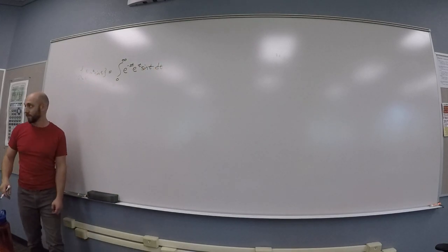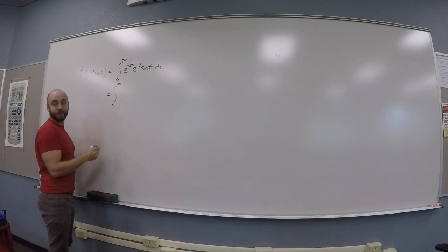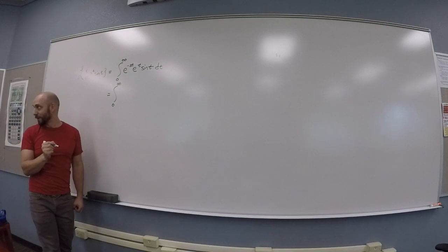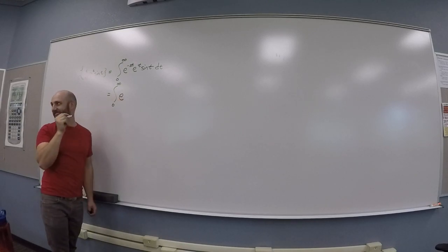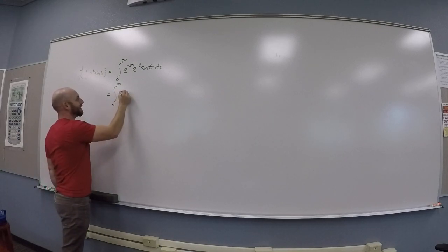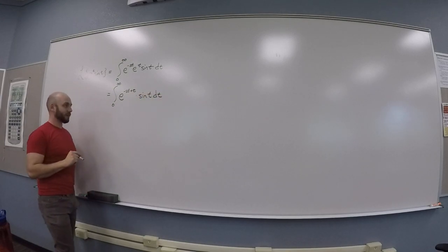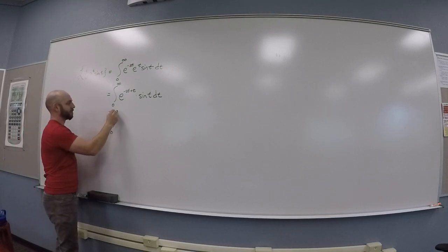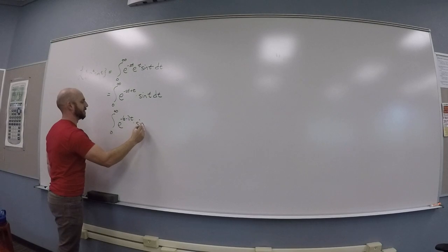Yes. Okay, so then you use an exponent rule. That would be e to the minus st plus t times sine t dt. Okay, and then maybe you rewrite as integral from zero to infinity of e to the minus s minus one in parentheses t times sine t dt. And then you do by parts.